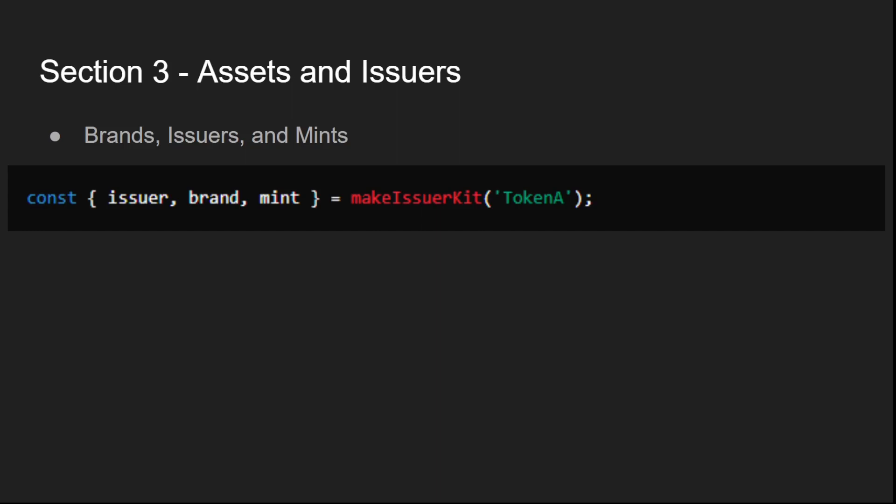Let's break down the key topics. In Agoric, assets are managed using three key concepts: brands, issuers, and mints.